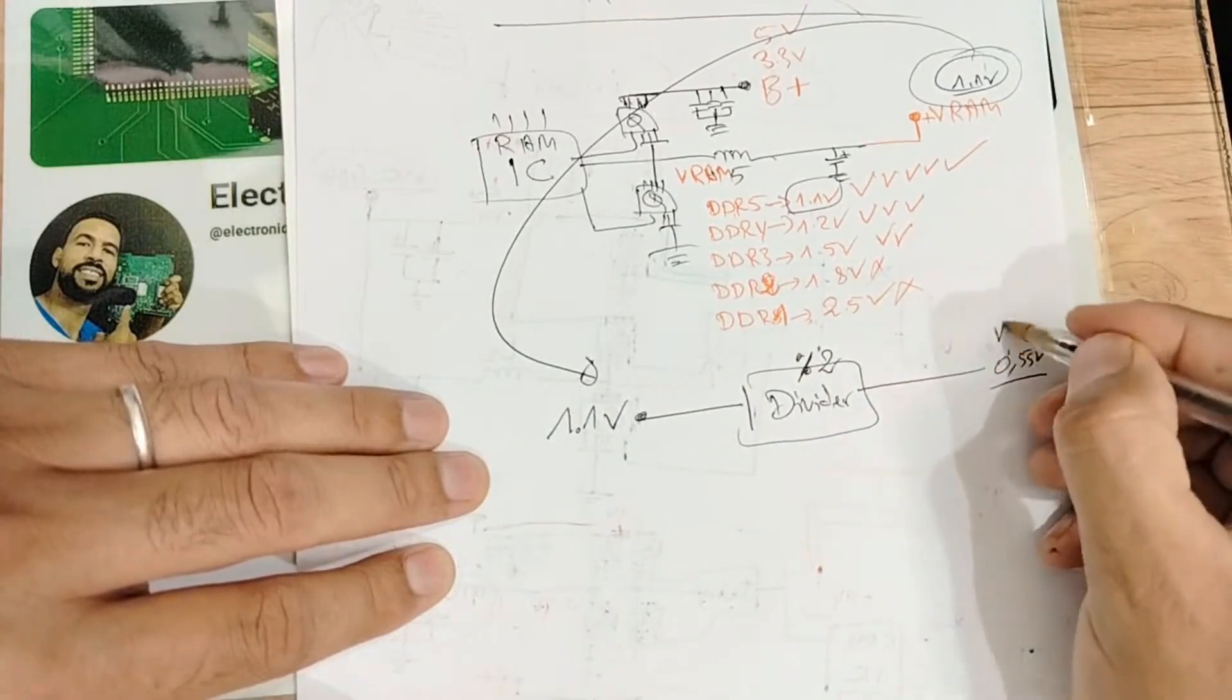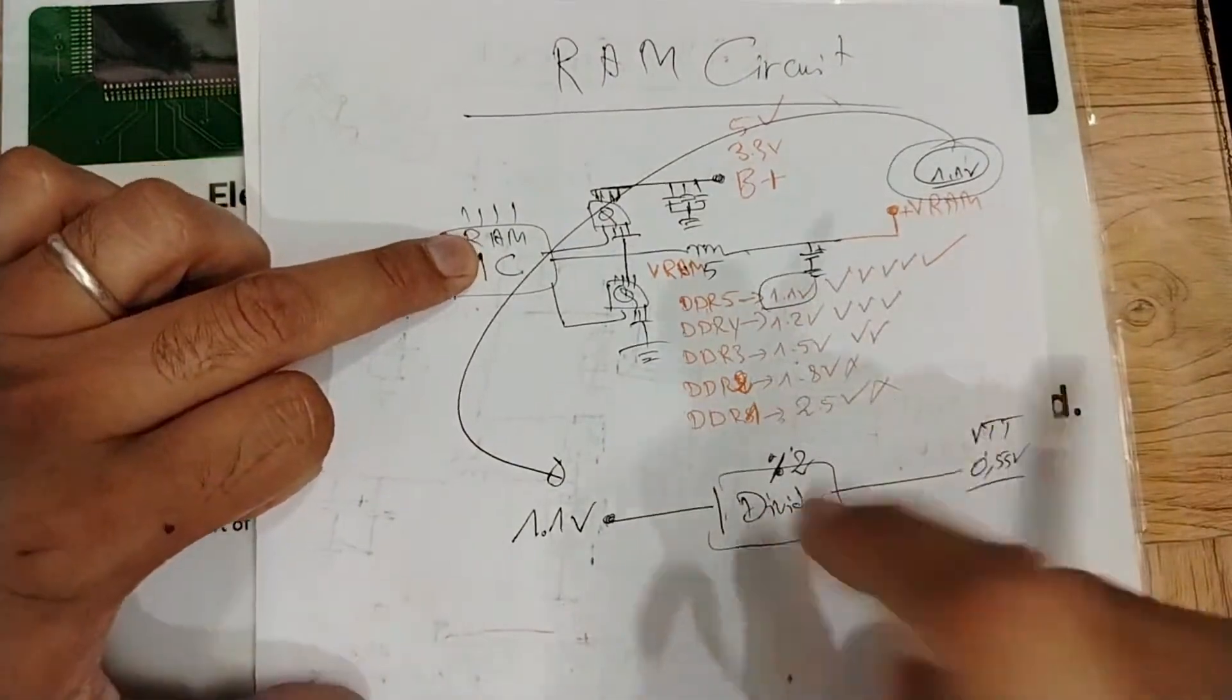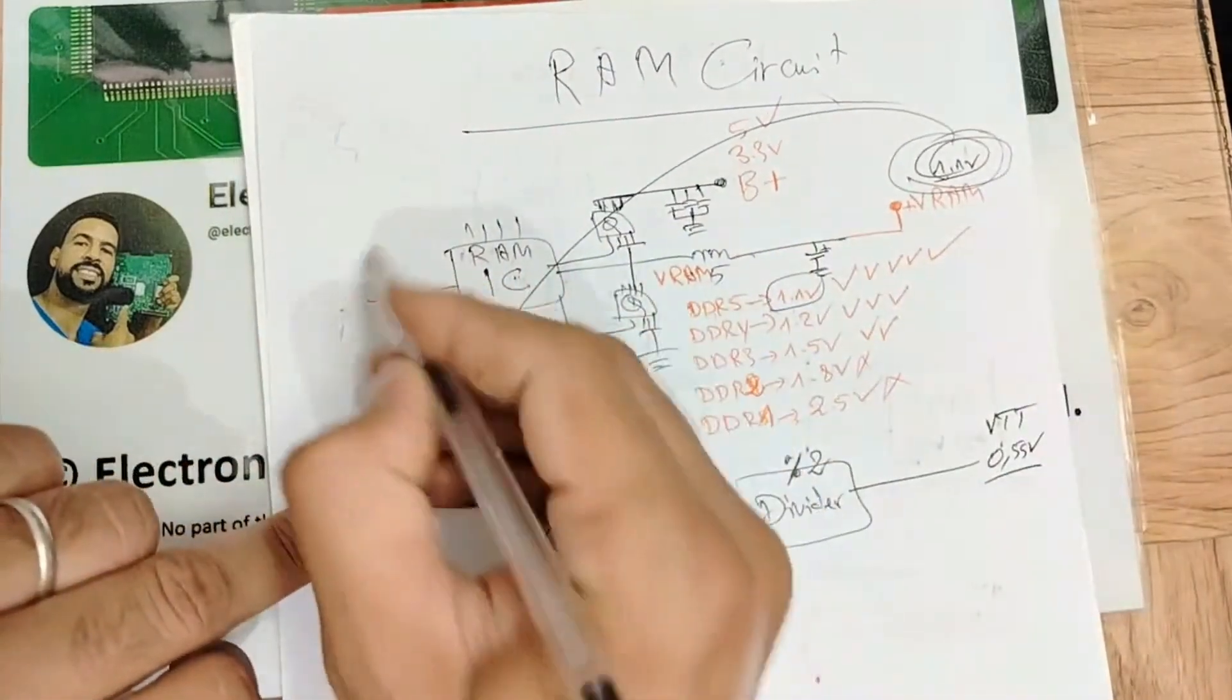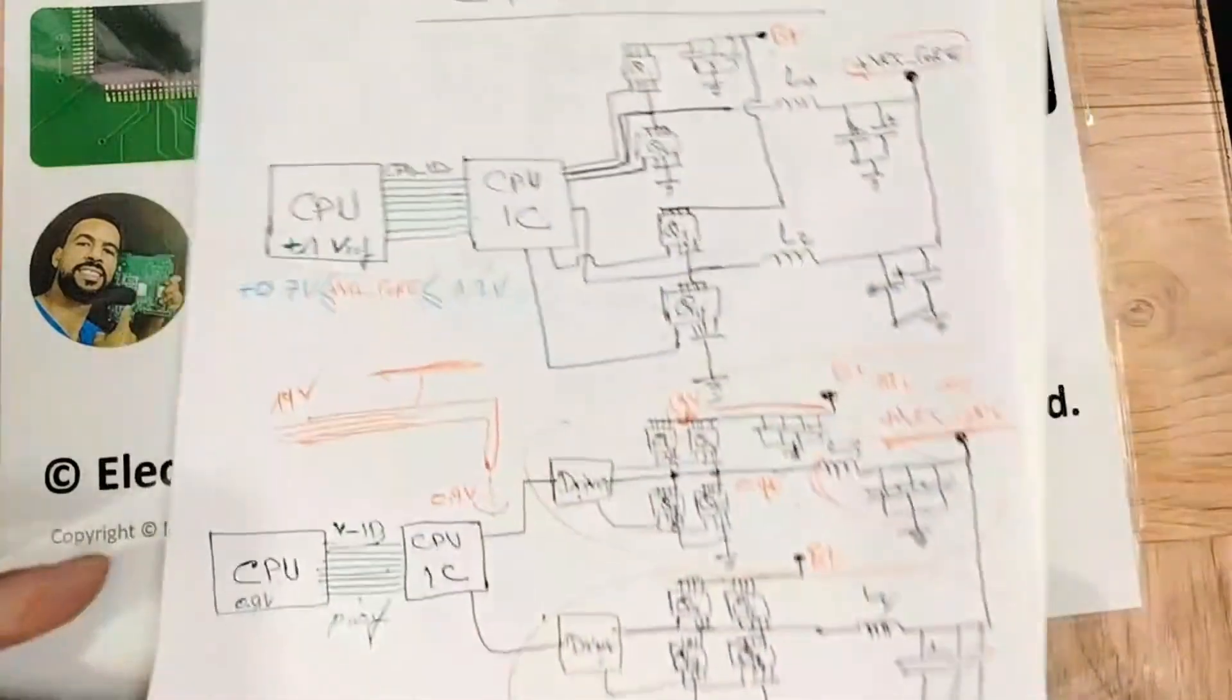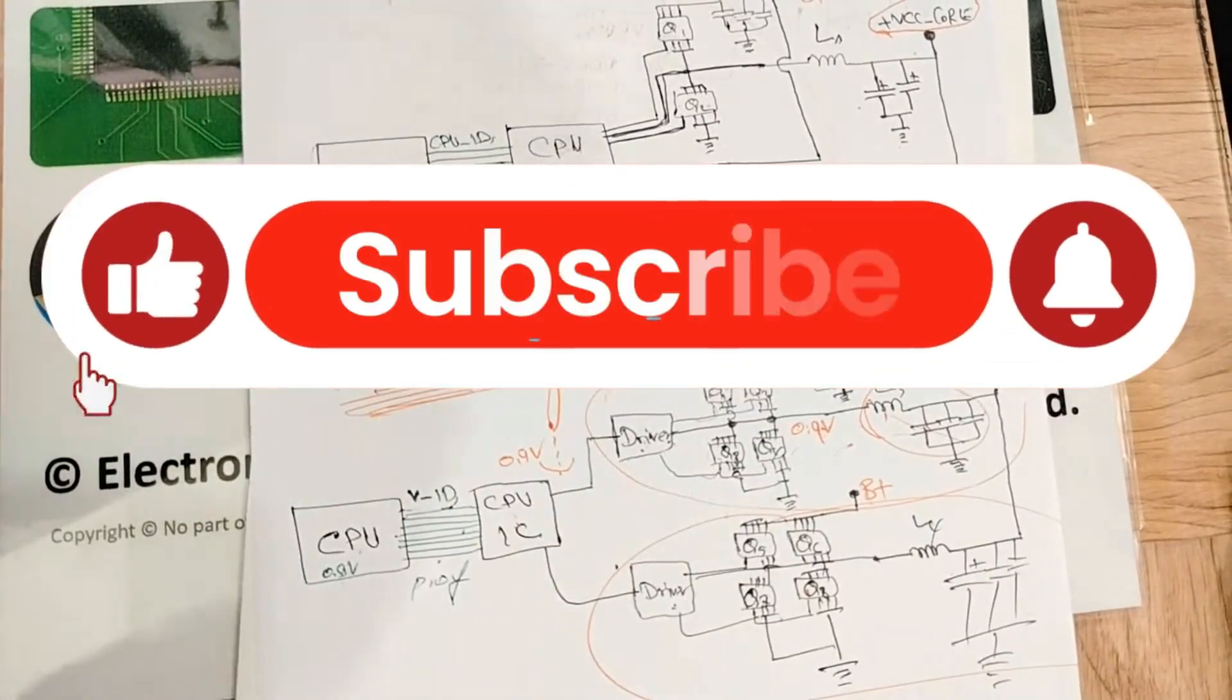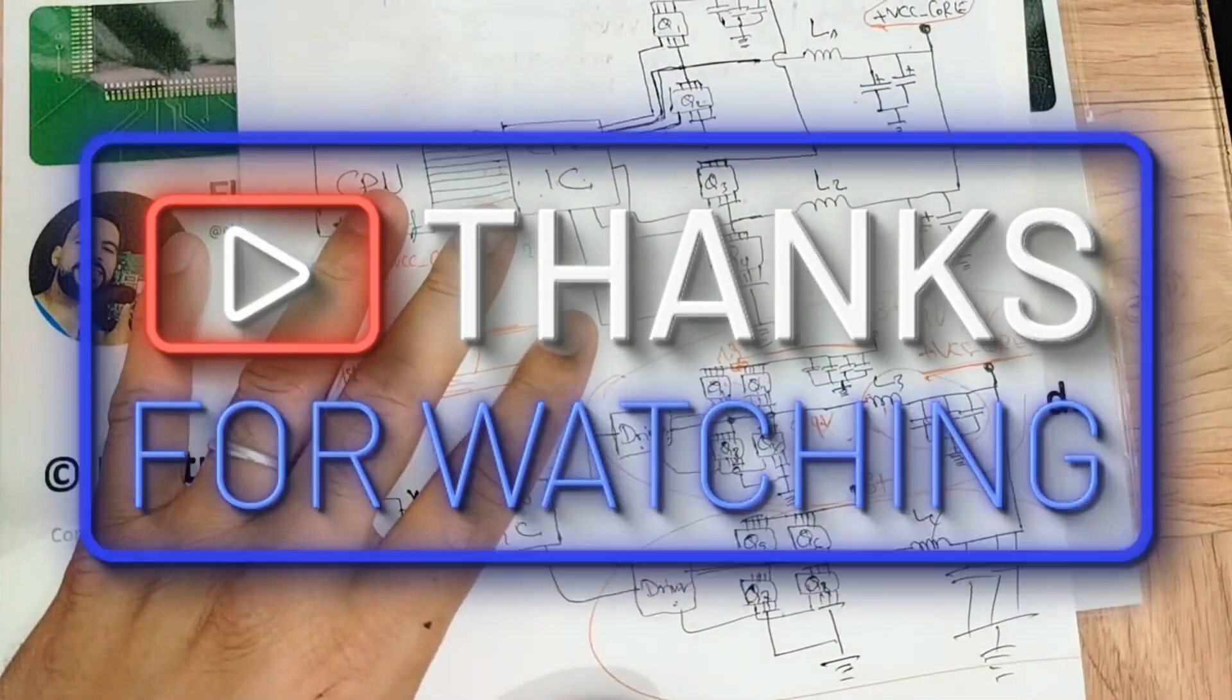My friends, sometimes we can find two ICs, but sometimes we can find the same IC generate 1.1 volts and also divide it by two. I hope that you understand, my friends. We have basically discussed three schematics: RAM circuit, CPU circuit, charge circuit, and also 3-volt, 5-volt circuit.